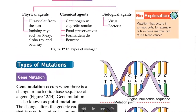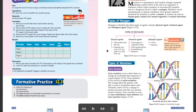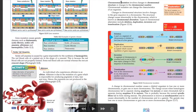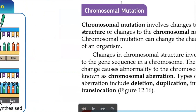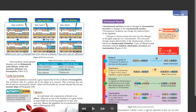Now for the types of mutation — there are only two. The first one is gene mutation and the second one is chromosomal mutation. Let's go through them one by one.